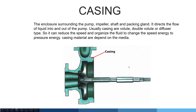The casing is the enclosure surrounding the pump impeller, shaft, and packing. It directs the flow of liquid into and out of the pump. Usually casings are volute, double volute, or diffuser type, which reduces the speed and converts the speed energy to pressure energy. Casing material depends on the media being pumped. You can see the casing in this picture.